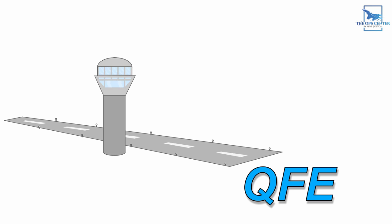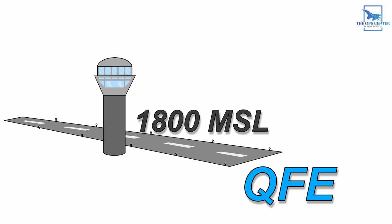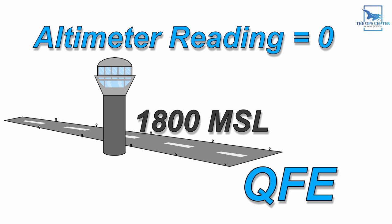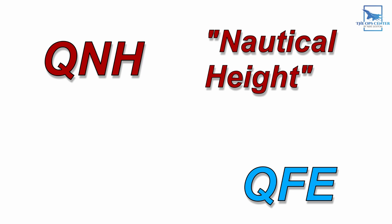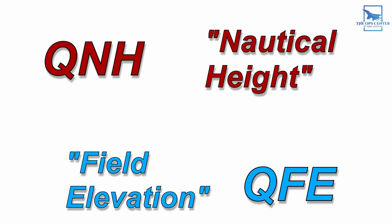QFE is a little different. Instead of putting in a pressure to align zero altitude with sea level, QFE pressure sets the zero at the airport's elevation. So while sitting on the ground at our hypothetical airport that's 1,800 feet above sea level, the altimeter would read an altitude of zero. If you're having trouble remembering the difference, think of the NH in QNH as nautical height, since it will show your height above sea level, and the FE in QFE as field elevation, since that's your altitude above the airfield.